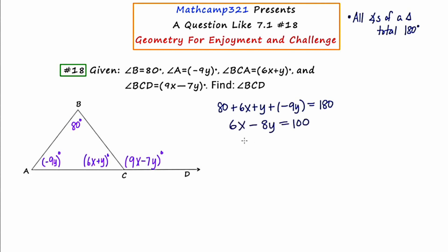And then I can also notice that each of these terms is divisible by 2. And dividing everything through by 2 will make it even easier, leaving me with 3x minus 4y equals 50.